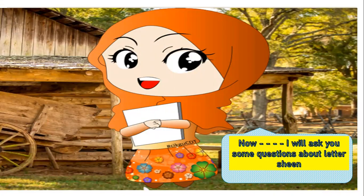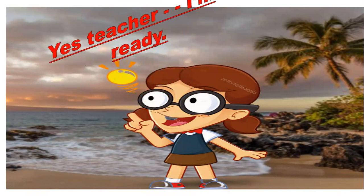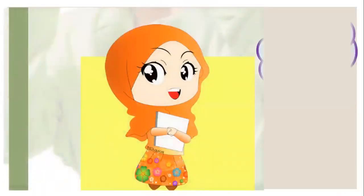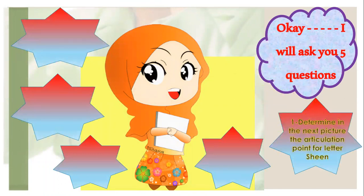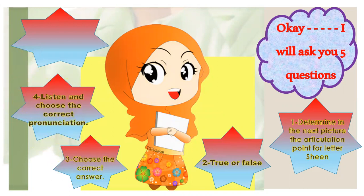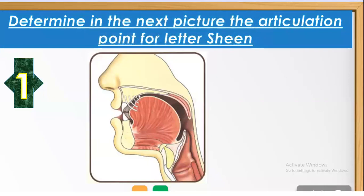Now I will ask you some questions about letter Sheen. Are you ready? Yes, teacher, I am ready. I will ask you five questions. The first question: determine in the next picture the articulation point for letter Sheen. Where is the makhraj of Sheen? Ash, ash. Can you find it in the picture? Yes, it's here — the middle of the tongue.